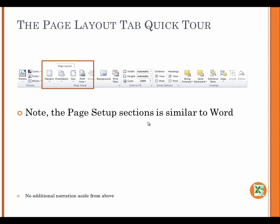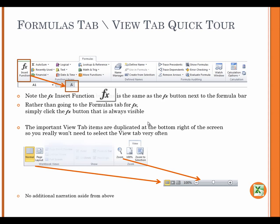Formulas tab, View tab, Quick Tour. Note the Page Setup section is similar to Word. Formulas tab, View tab, Quick Tour. Note the f of x Insert Function button is the same as the f of x button next to the Formula bar. Rather than going to the Formulas tab for f of x, simply click the f of x button that is always visible. The important View tab items are duplicated at the bottom right of the screen, so you really won't need to select the View tab very often.